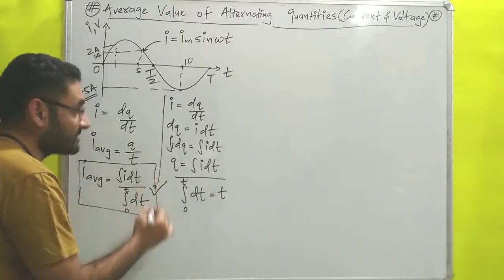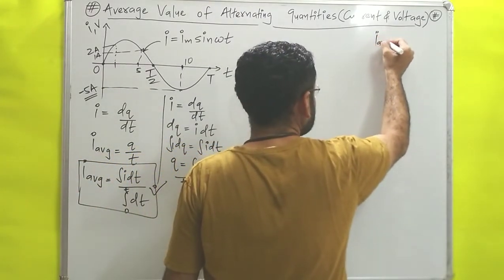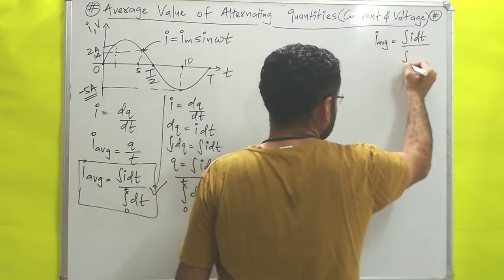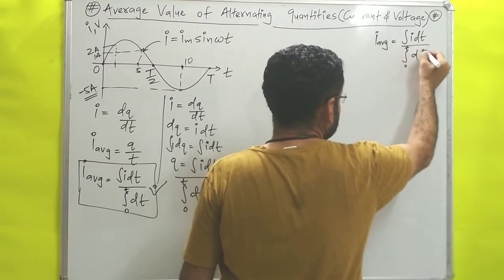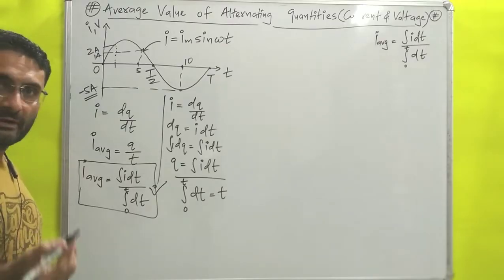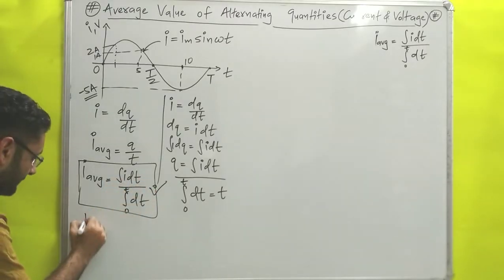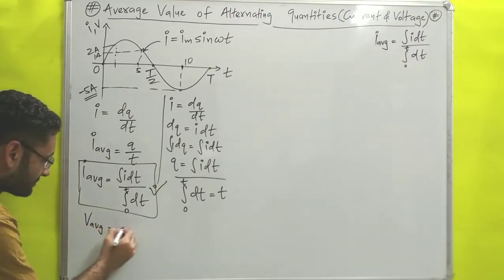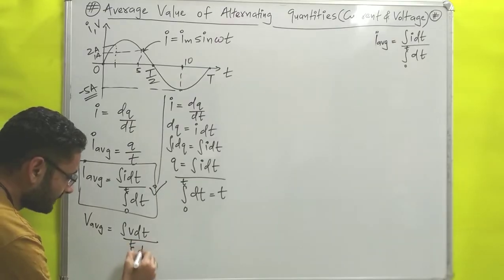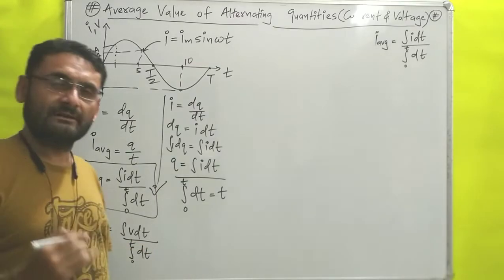This is the most important equation, so I will note it: I_avg = ∫I dt / ∫₀ᵀ dt. Similarly, if you want to find out the value of average voltage, you replace I with V: V_avg = ∫V dt / ∫₀ᵀ dt. By using this equation you can find out the value of V average.